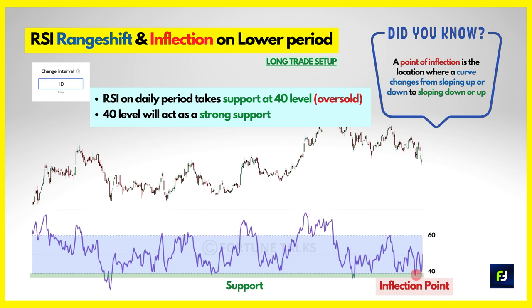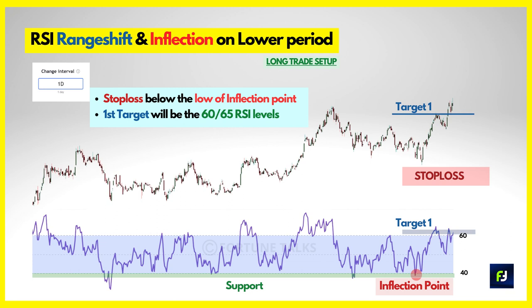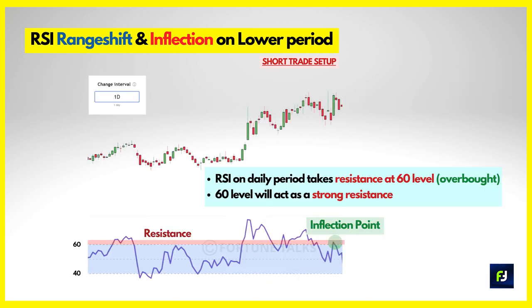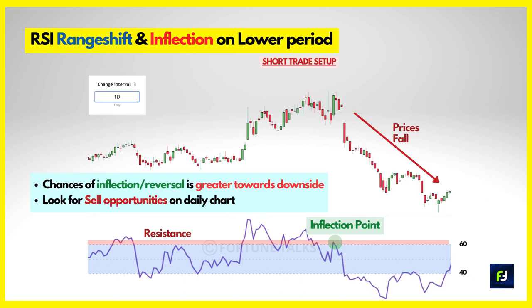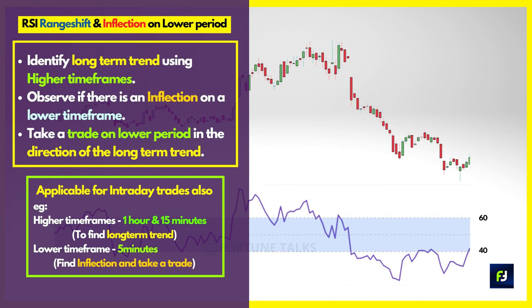When a bullish candle is formed at the 40 RSI level, prices may bounce back up — you can buy the stock. Stop loss can be aggressively placed at the low of the bullish candle and the first target is the 60 RSI level. On the contrary, when monthly and weekly RSI is below 40 indicating bearish trend but RSI takes resistance at 60-65 in the daily chart, that is the inflection point. If a bearish candle forms at 60-65 RSI, look to enter short, with stop loss at the high of the bearish candle and first target at 40 RSI.